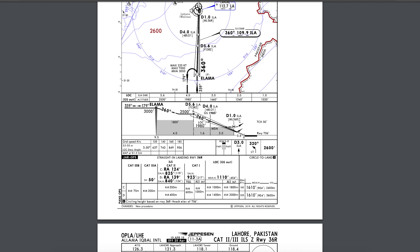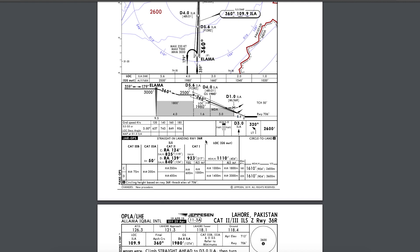Every ILS has a limit which we call minimums. If you don't have the runway in sight at minimums, you have to go around because you cannot trust your instruments. If we follow ILS with glide slope and localizer, we will go around at that point if the runway is still not visible.